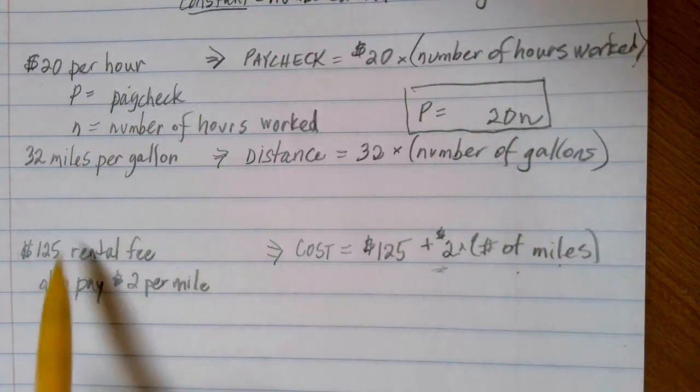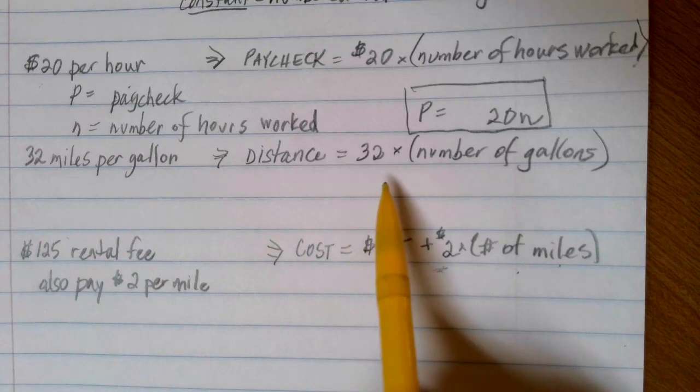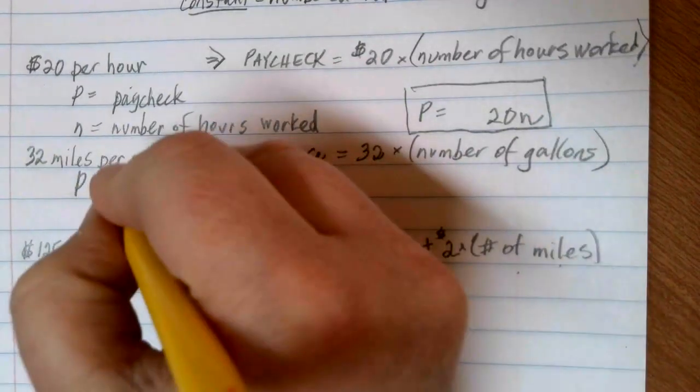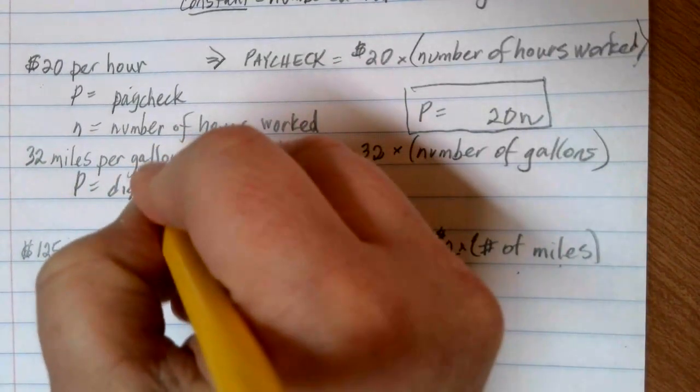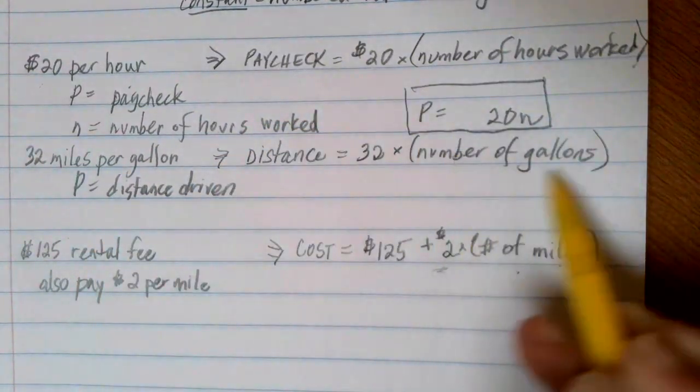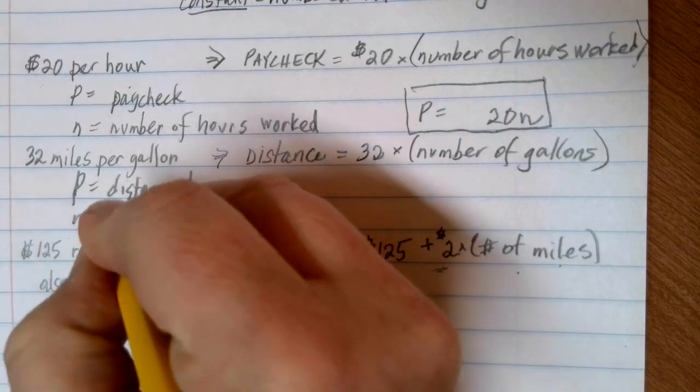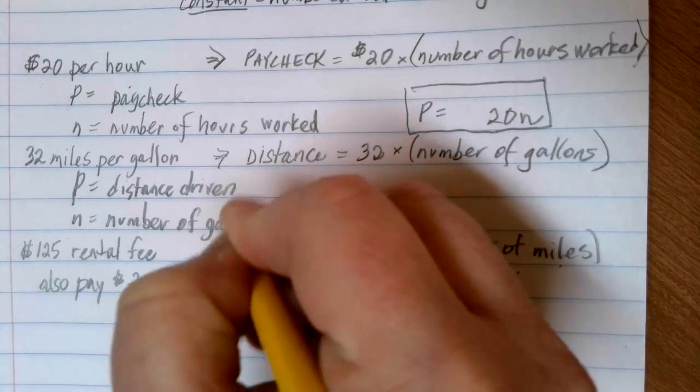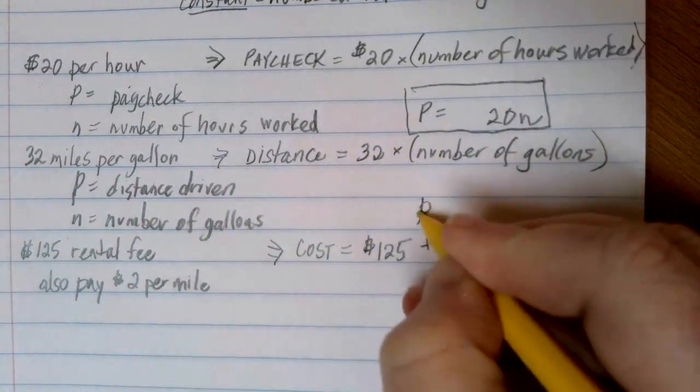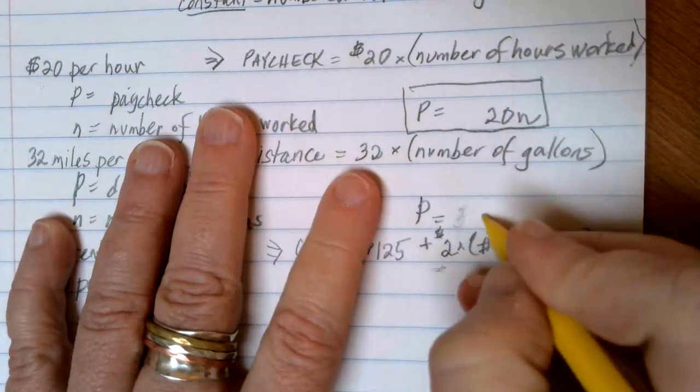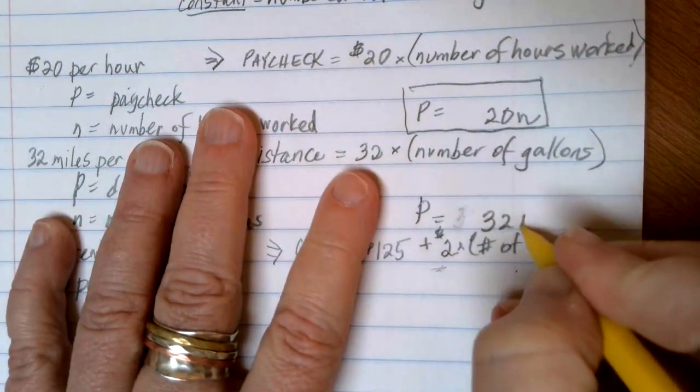If we're thinking about our miles per gallon example, the distance is going to be equal to 32 times the number of gallons. My P is what I'm measuring, which in this case is the total distance that I can drive. And it's going to be depending on N, which is my number of gallons. And I can come up with my equation: P is equal to 32 times N.